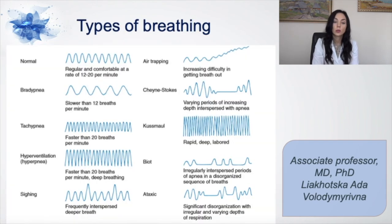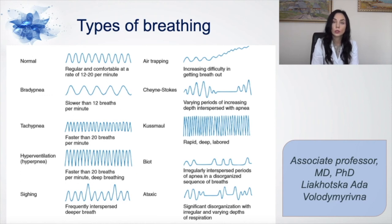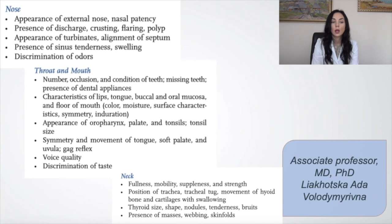Dynamic inspection: calculate and check breathing rates. Normal is 12 to 20 breaths per minute. Bradypnea is slower than 12. Tachypnea is more than 20. Hyperventilation could also be present. You could look at the monitor for air trapping, changes in thorax, and pathological types of breathing. Also pay attention to nasal breathing — whether there is presence of discharge, crusting, flaring, or polyps. Then look at the throat and mouth: occlusion and condition of teeth.